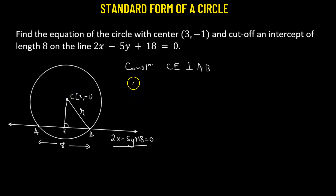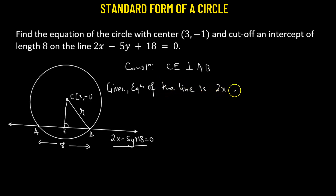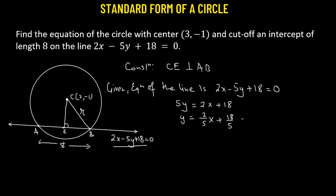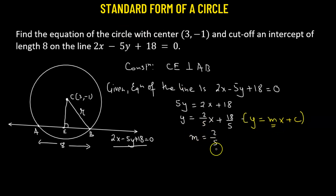The equation of the line is 2x minus 5y plus 18 equals 0. We rewrite this as 5y equals 2x plus 18, then divide throughout by 5 to get y equals (2/5)x plus 18/5. Comparing this with the slope-intercept form y equals mx plus c, we find that the slope m of the line is 2/5.